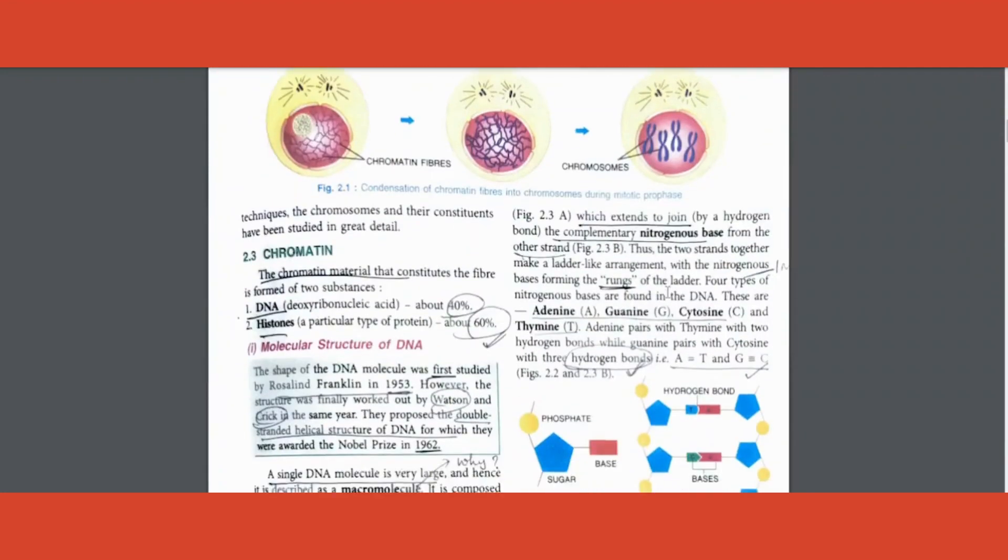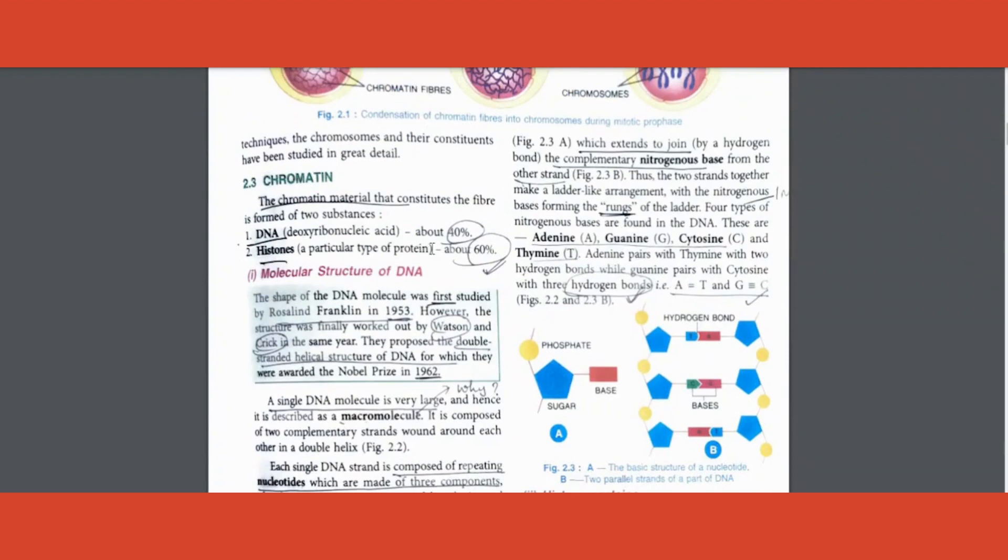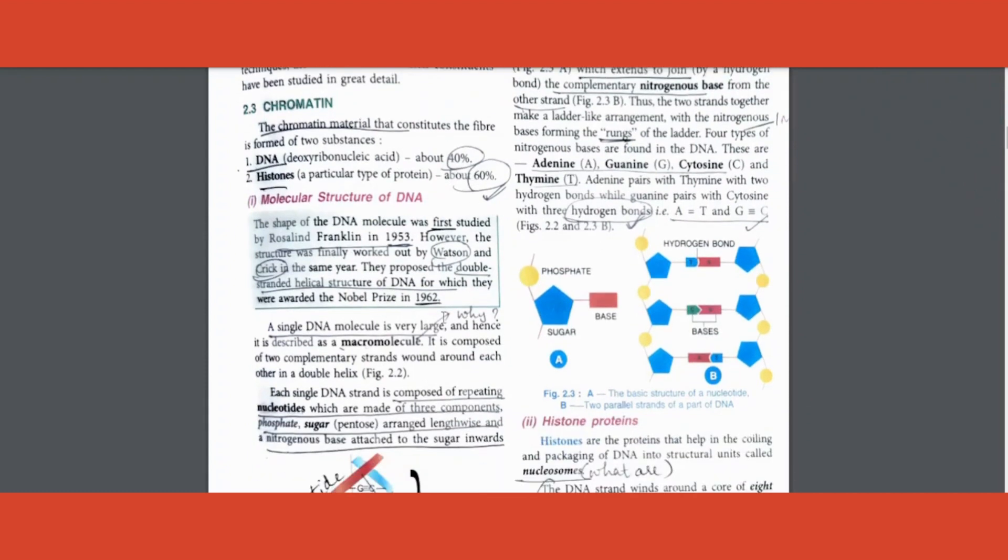Next is where and who discovered it - the larvae of salamander, the person's name you should know. Coming to chromatin, the question is define chromatin material or what percentage of DNA is present, histone is present you should know. Moving ahead, who discovered the structure of DNA? Some of you end up writing first name Rosalind Franklin, it is not correct. He studied the molecule but could not come up with the structure. Who came up with the structure? Watson and Crick in 1953, they got Nobel in 1962.